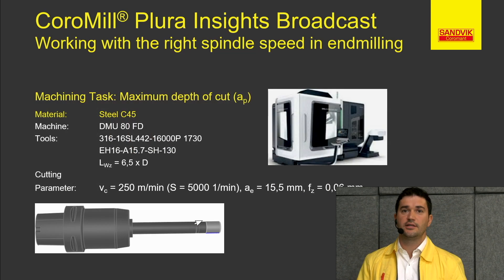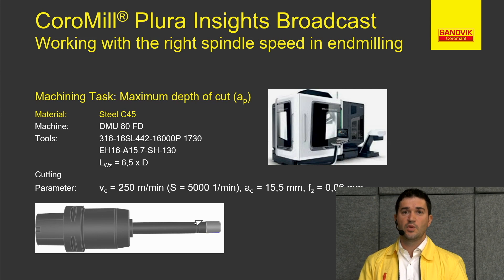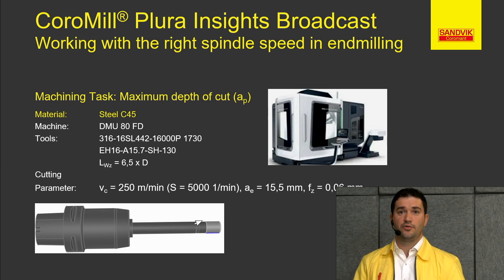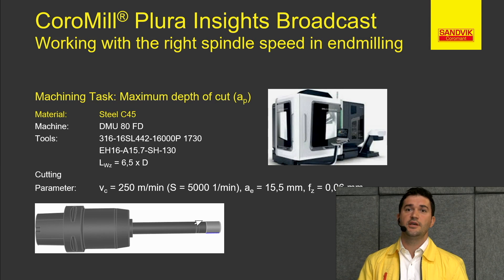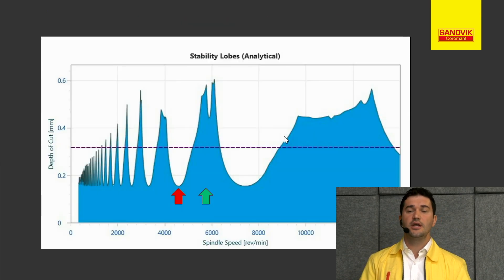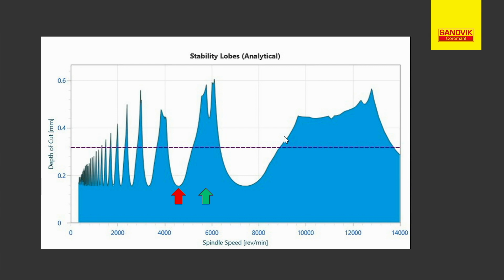Let's put this into practice with our tool. We have a long overhang projection of six and a half times diameter, with a heavy metal shank and a carbide exchangeable head. We also analyzed the stability lobe for our tool and identified a bad RPM and a good RPM: 5,000 RPM — or 250 meters per minute — is the not-so-safe RPM, and 6,000 RPM is the good RPM. Let's take this to the machine and see how they look.